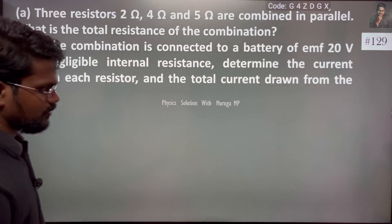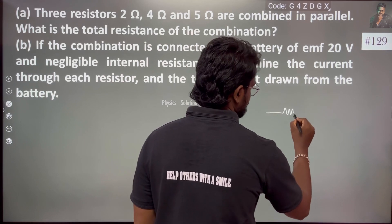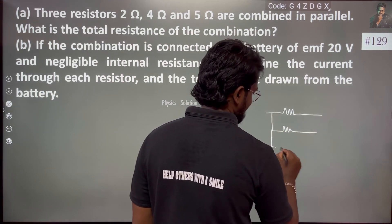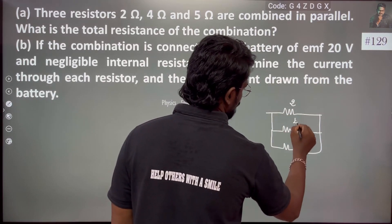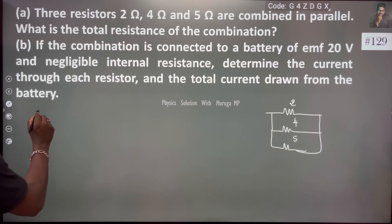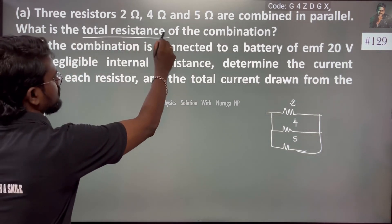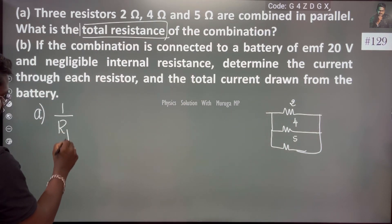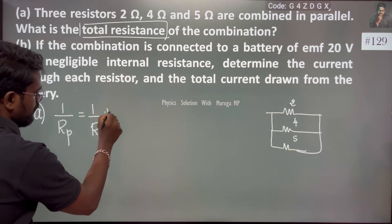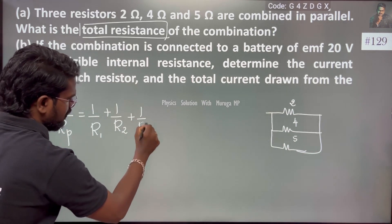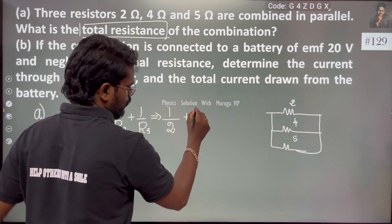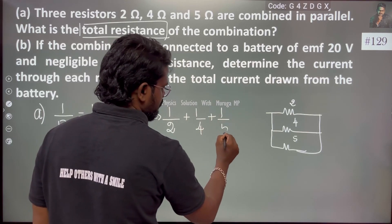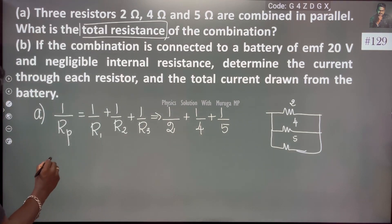So, a basic question. First one: 2 ohm, 4 ohm, 5 ohm. We can take 1/Rp which is equal to 1/R1 plus 1/R2 plus 1/R3. We have the values, so 1/R1 is 2, plus 1/4, plus 1/5. We have to take LCM of 2, 4, 5.